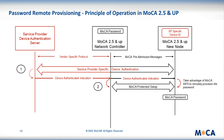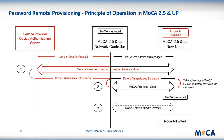However, once the device is successfully authenticated, the provisioning can take advantage of the MoCA protected setup protocol, supported by MoCA 2.5 and up devices, to transmit the MoCA network password from the NC to the new MoCA device, instead of using, as for MoCA 2.0, the vendor or service provider specific protocol. Finally, the new MoCA device, now provisioned with the MoCA network password, may get admitted on the MoCA network that runs in privacy mode.